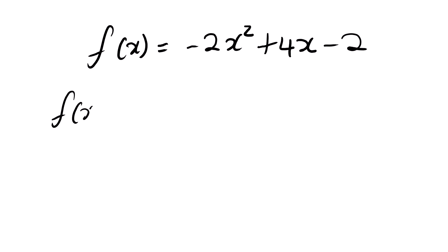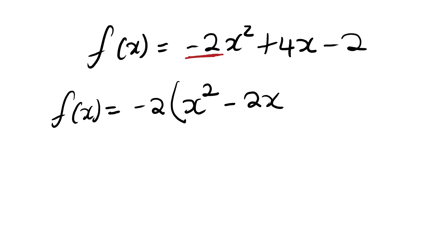What do we do? f(x) equals — we are going to factorize, we are going to factor out this number. When we factorize, we have negative 2 outside the bracket. If we remove negative 2 from negative 2x squared, we are left with x squared. Then we remove negative 2 from positive 4x, and we are left with negative 2x. Factoring out negative 2 from the constant leaves positive 1. After factorizing, the coefficient of x squared is positive 1 indeed.